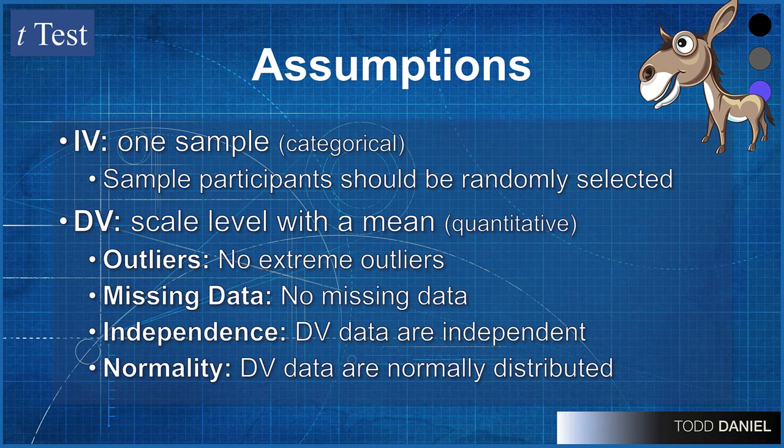Our dependent variable is scale level for which we can calculate a mean. Well, that dependent variable is weight. So we have one group, one sample, bags of coffee, with one dependent variable that has a mean, the weight of the coffee.